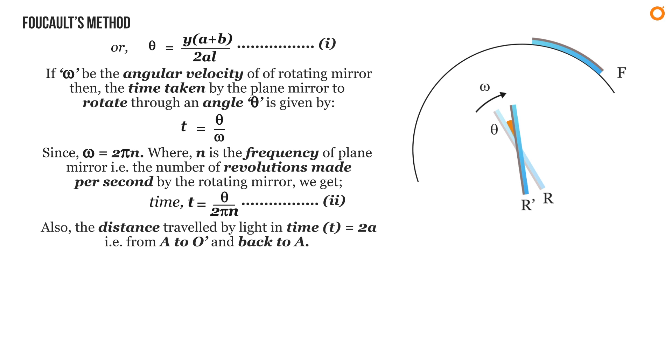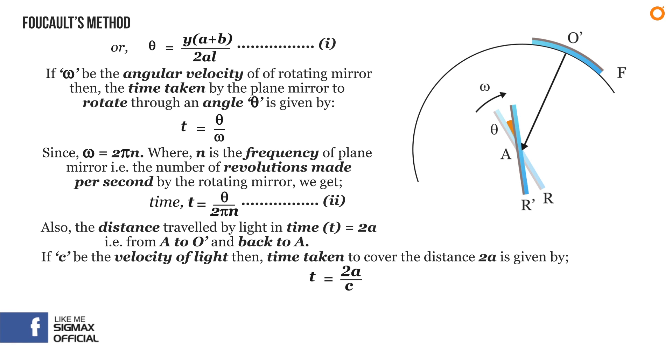Also, the distance traveled by light in time t is equal to two times the radius of curvature A, that is from A to O' and back to A. So if c is the velocity of light, then time taken to cover the distance 2A is given by t equals 2A divided by c. Let it be equation three.